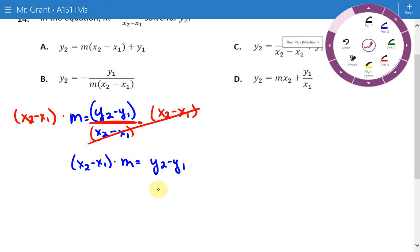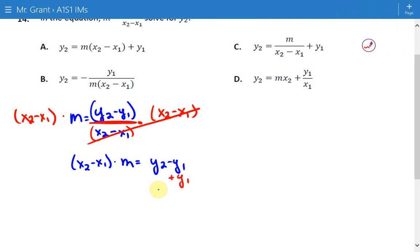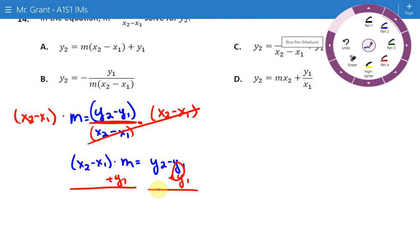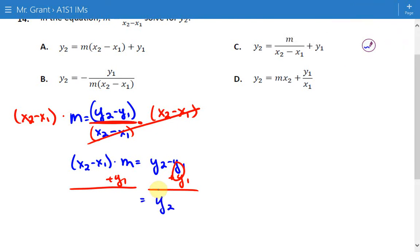I think to get y2 by itself, we still need to add y1 to both sides. And when we do that, we end up with y2 equals x2 minus x1 times m—we already had that—plus y sub 1.